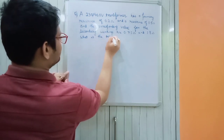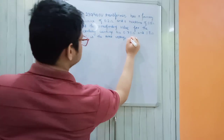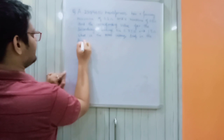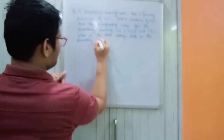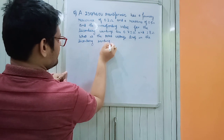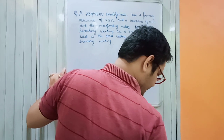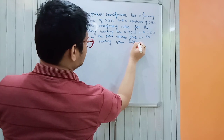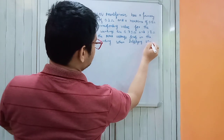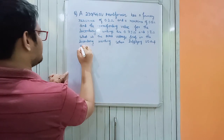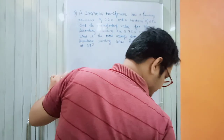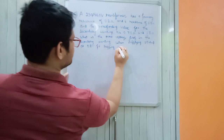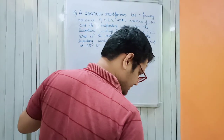The question asks: what is the total voltage drop in the secondary winding when supply current is 10 ampere at 0.8 power factor lagging and 0.8 power factor leading?